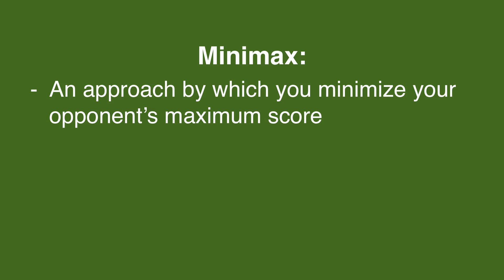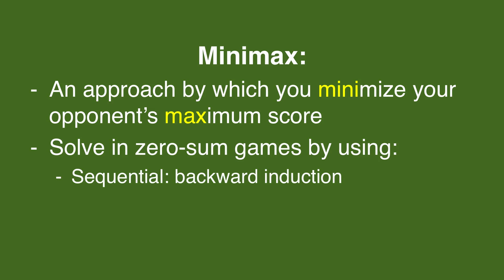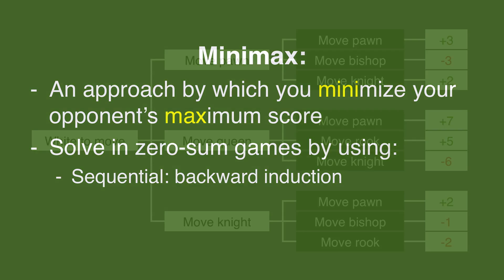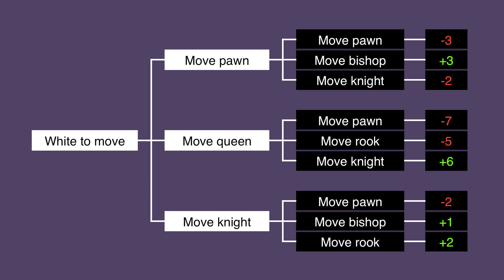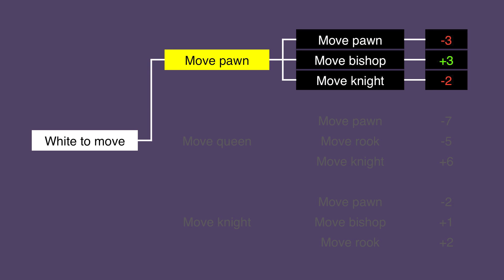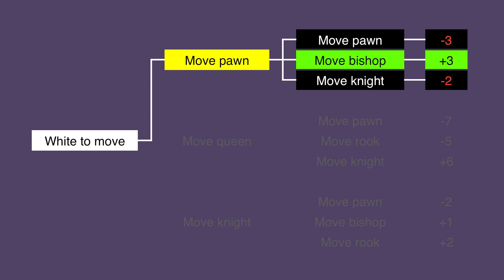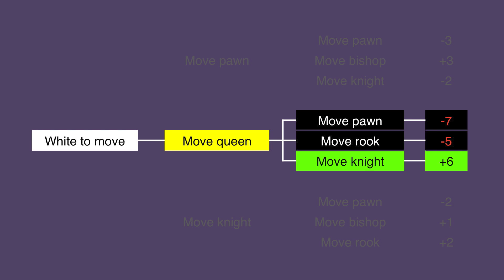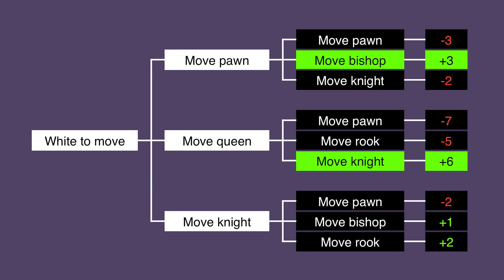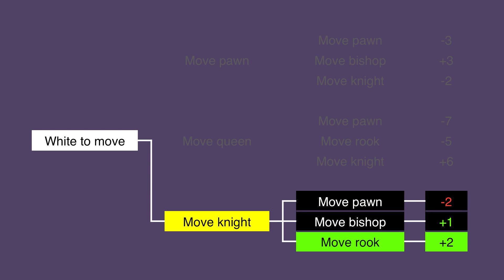This is where Minimax comes into play. Minimax is the approach by which you minimize your opponent's maximum score. In a sequential zero-sum game, you do this with backward induction. In backward induction, instead of looking at your next turn and working forward, we start from the end and work our way backward. If White moves his Pawn, Black's best move will be to move his Bishop for a payoff of plus 3. If White moves his Queen, Black's best move will be to move his Knight for a payoff of plus 6. And if White moves his Knight, Black will move his Rook for a score of plus 2.